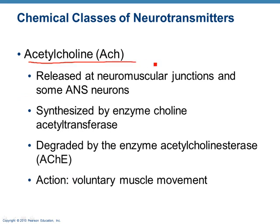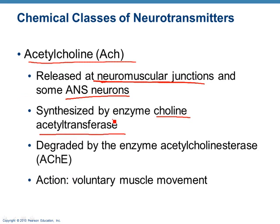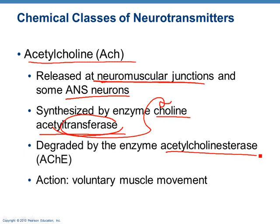We already know acetylcholine — that's the one released at the neuromuscular junction, and that's what stimulates skeletal muscle. There are some autonomic neurons that also use it, but the main one to focus on is the neuromuscular junction. It is made inside the axon terminal by an enzyme called choline acetyltransferase — that transferase puts the acetyl on the choline to make acetylcholine. Then you have acetylcholinesterase that breaks it down. So one enzyme makes it and one enzyme breaks it down. Its action is voluntary muscle movement.